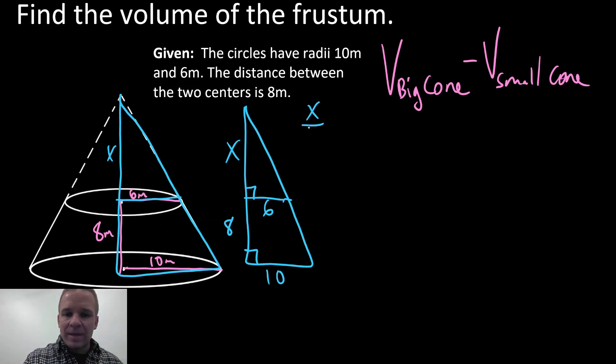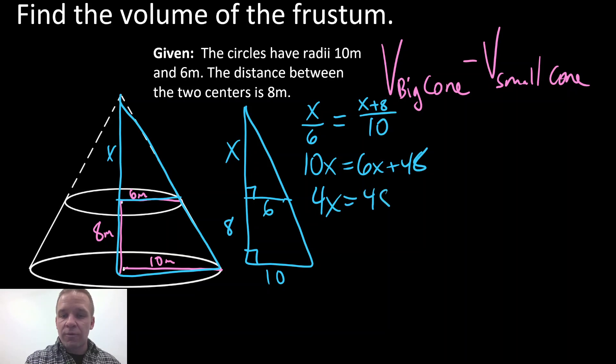So if I set up X divided by 6, that's my height of that small triangle over its base, equals the height of the big triangle, which is X plus 8 over its base. And when I cross multiply, I'll have 10X equals 6X plus 48. I'm going to subtract 6X and get 4X equals 48. So X is equal to 12. And I'm going to go ahead and erase that, pop a 12 right here. Oh baby, we good. We are all sorts of good.